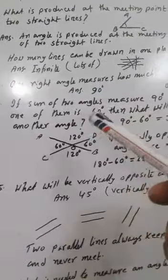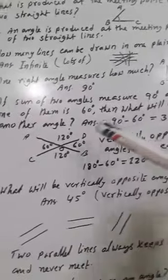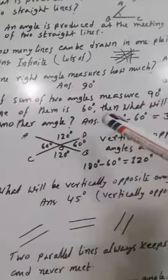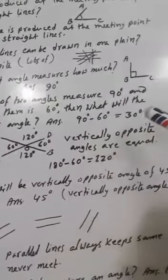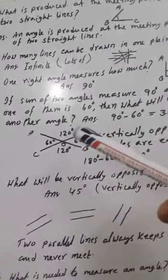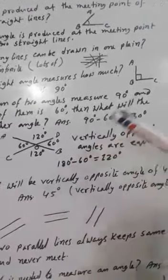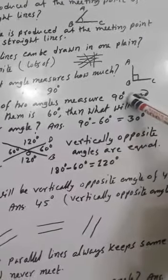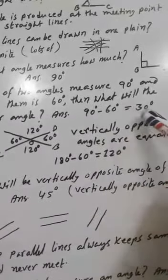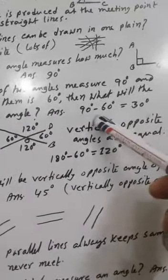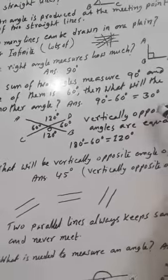If the sum of two angles measures 90 degrees and one of them is 60 degrees, then what will be the other angle? If the sum is 90 degrees and one is 60 degrees, the other angle will be 90 minus 60, which is 30 degrees.